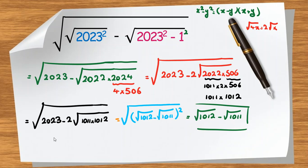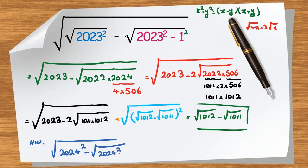As homework, try to solve the square root of 2024 minus the square root of 2024 squared minus 1 using the same idea. If you can't, think about why and comment your answers below. If you have questions or want to learn more about algebra, number theory, geometry, combinatorics, or calculus, feel free to send a message via WhatsApp in the description. Please subscribe, turn on the bell, and like the video. Thanks, see you next time!